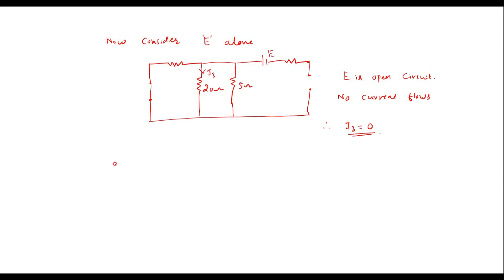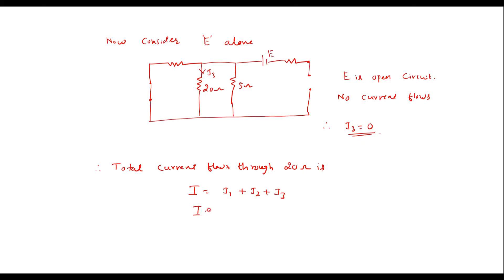Now the total current flowing through the 20 ohm resistor is I = I1 + I2 + I3 = 1.667 + 0.8 + 0 = 2.46 amps. This is the total current flowing through the 20 ohm resistor. Thank you for watching.